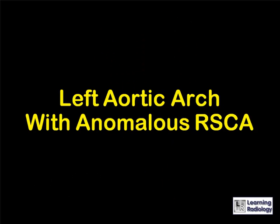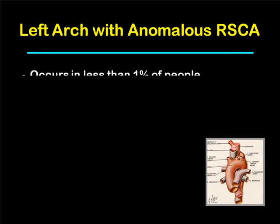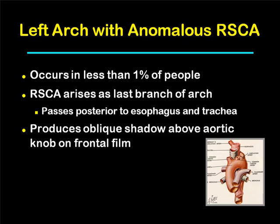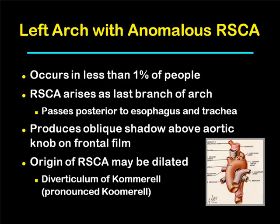Left aortic arch with anomalous right subclavian artery. This is a rare abnormality occurring in less than 1% of all people. The right subclavian artery arises as the last branch of the aortic arch and passes posterior to both the esophagus and the trachea. It produces an oblique shadow above the aortic knob that can be seen on the frontal chest radiograph. The origin of the right subclavian artery can be dilated — that's called the diverticulum of Kommerell.